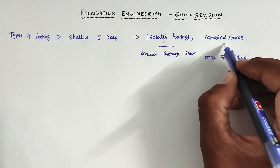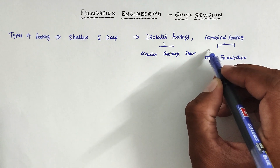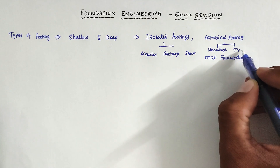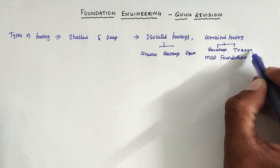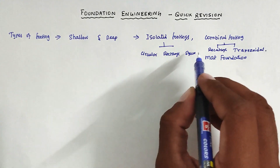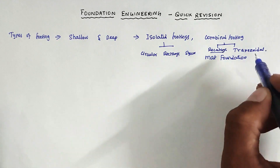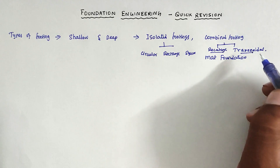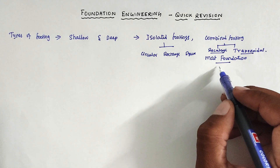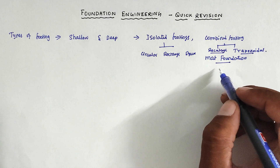For combined footing there are two types: one is rectangular combined footing and another one is trapezoidal combined footing. Whenever two columns are the same size, we go for a rectangular combined footing. When column sizes are different, we go for a trapezoidal combined footing. Mat foundation is the foundation laid for all the columns.